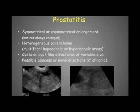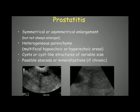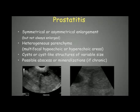On ultrasound, prostatitis will show enlargement, which can be symmetrical or asymmetrical, though sometimes the prostate is not enlarged but simply heterogeneous. The parenchyma will become heterogeneous with hypoechoic areas. Mostly we look for large cysts or cyst-like structures of variable size — those greater than one centimeter are suspicious and should be aspirated to determine if they are infected.